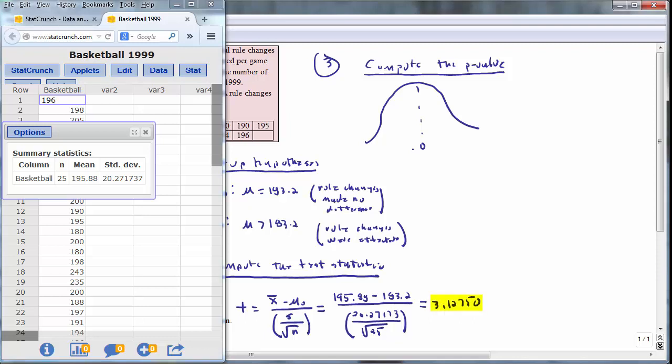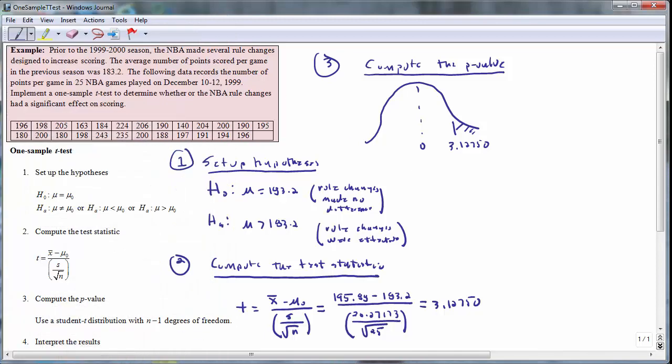In this case, the value of the test statistic is 3.12750. The p-value is the probability of obtaining a test statistic at least as extreme as 3.12750, and this would be the area of the right tail. The test statistic actually has a student t-distribution with n minus 1 degrees of freedom. The sample size is 25 in this case. If we subtract 1, then that will be 24 degrees of freedom.